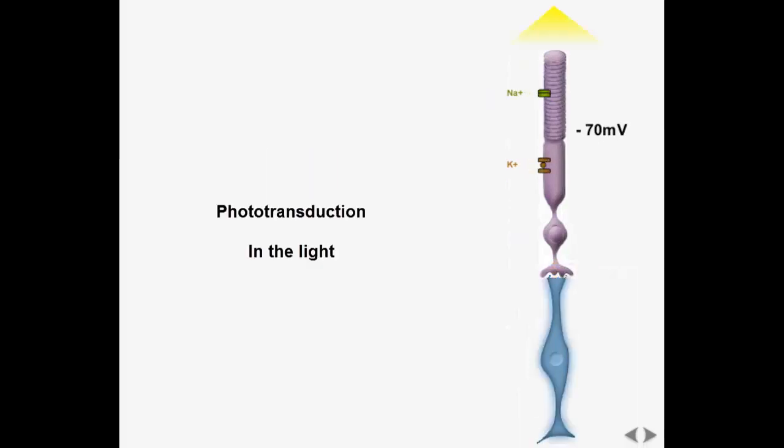In the light, a process within the receptor begins to close the sodium channels. This causes hyperpolarization of the photoreceptor. As a result, glutamate release is reduced.